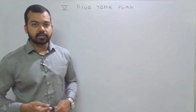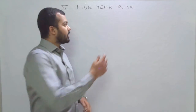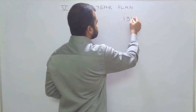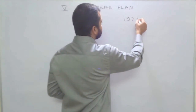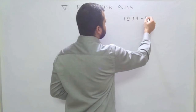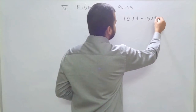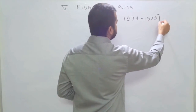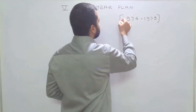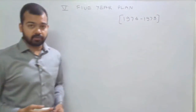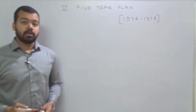First of all, we will write the period of this Five Year Plan. The period of the 5th Five Year Plan was from 1974 to 1979.